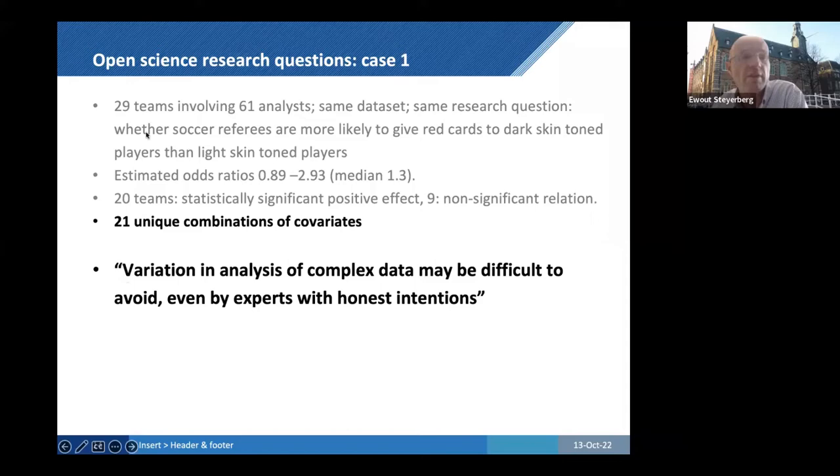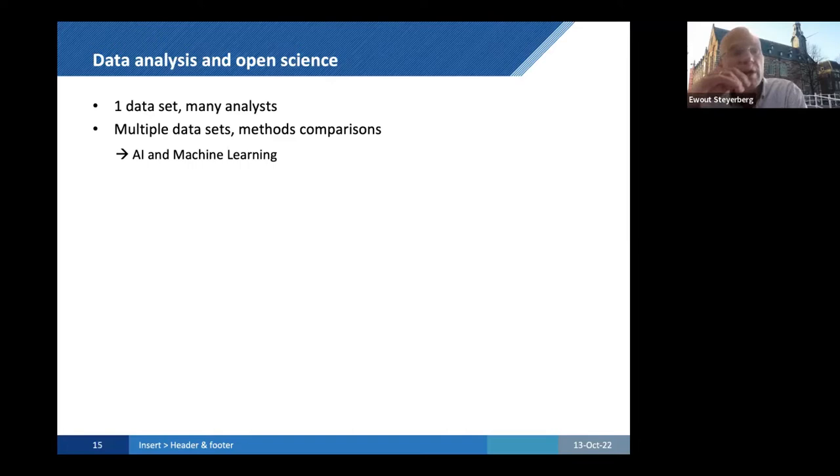Their conclusion was that these differences are really very large, especially by the unique combinations of covariates and how to adjust for an analysis. The variation in analysis of complex data may be difficult to avoid, even by experts with honest intentions. This is a strong point of open data competition, open science effort, that we realize this happens. The experts with honest intentions come up with very different answers.